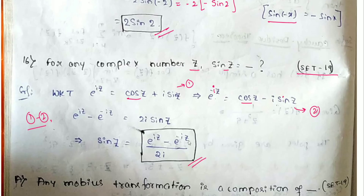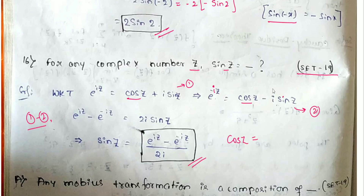Similarly, to find cos(z), we add the two equations. The sin(z) terms cancel: e^(iz) plus e^(−iz) equals 2·cos(z). So cos(z) = (e^(iz) + e^(−iz)) / 2. This eliminates sin(z) and gives us the cos(z) value.